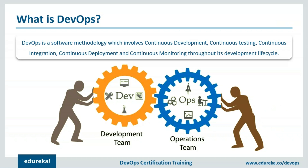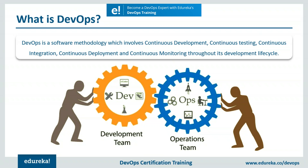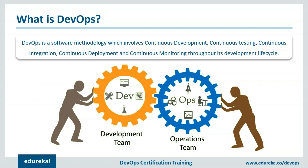Let me first brief you on DevOps. DevOps is basically a software development strategy which bridges the gap between the dev side and the ops side of the company. In simple words, DevOps is a software methodology which involves all the steps from continuous development, continuous testing, continuous integration, continuous deployment, and continuous monitoring throughout its development lifecycle.